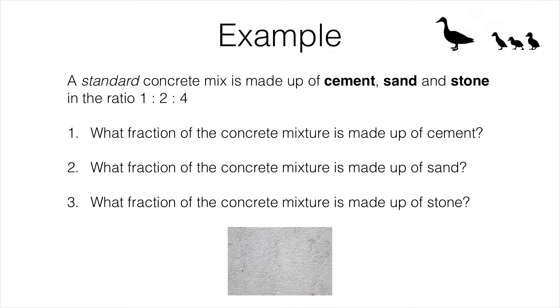So that's the first one represented in this ratio. Well, we've got seven parts all together. One part cement, two parts sand and four parts stone. One plus two plus four is seven. And out of those seven parts, only one of them is cement. So that means one seventh of the concrete mixture is cement.